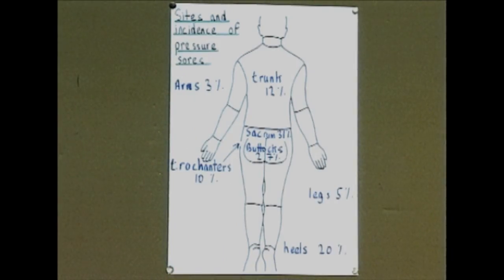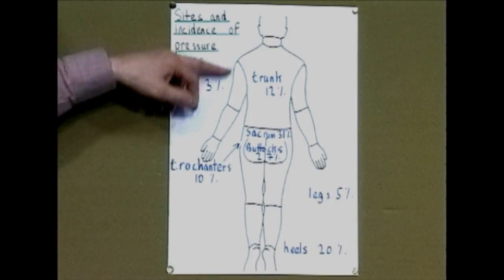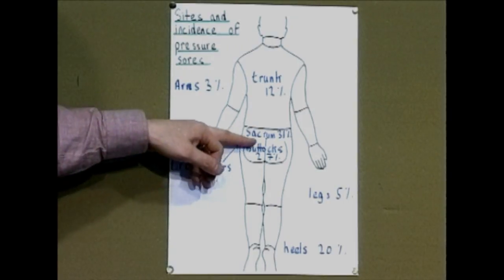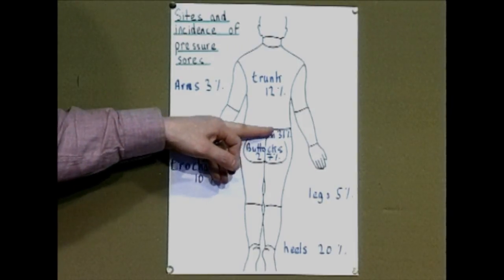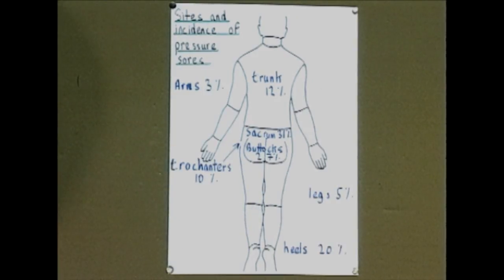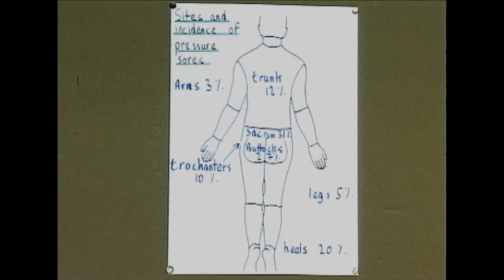Finally, thinking about sites, let's look at the results of a survey on the incidence of pressure sores in particular sites. Of the total amount of pressure sores identified: 3% affected the arms, 21% the trunk, 31% the sacral area, 27% different places on the buttocks, 5% the legs, and 20% the heels. So the most common areas are the sacrum, the buttocks, then the heels.